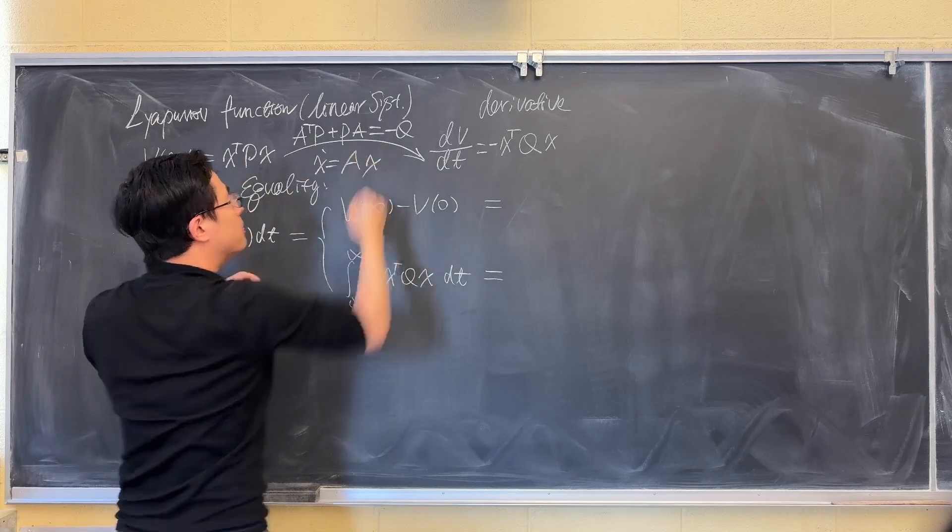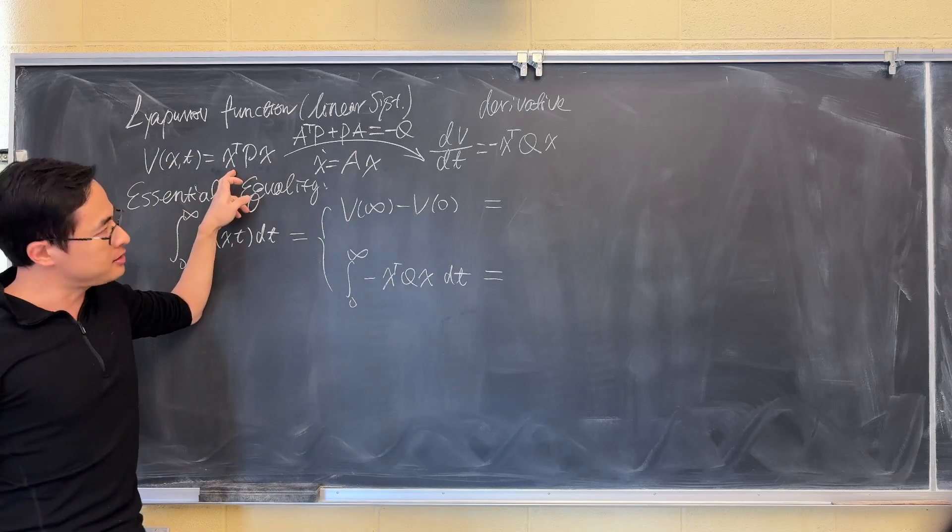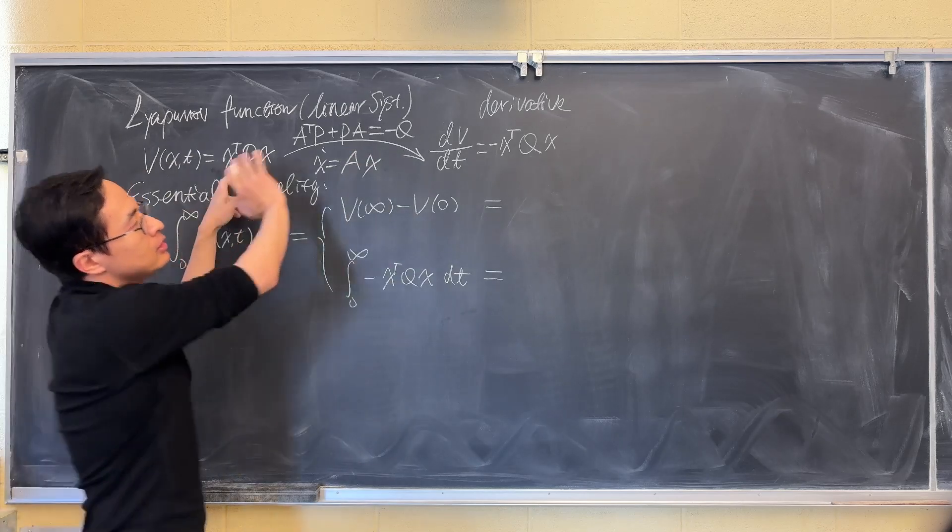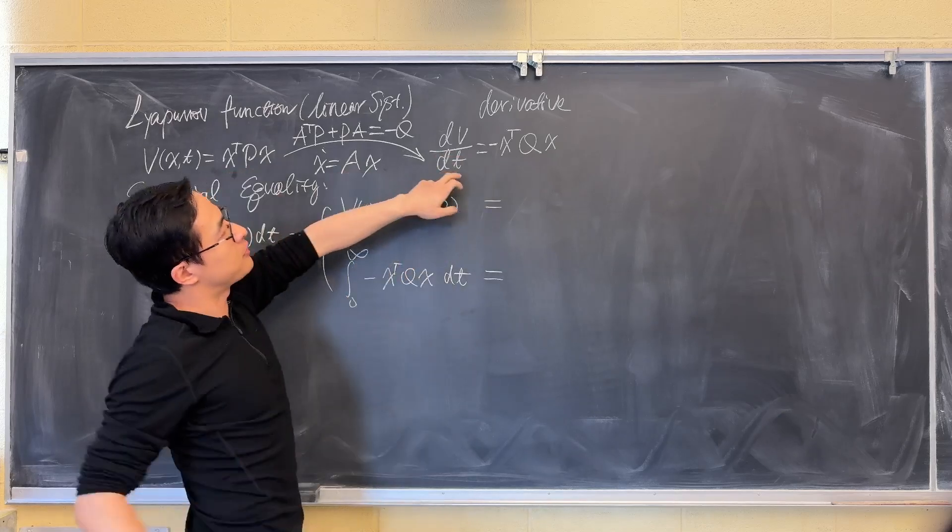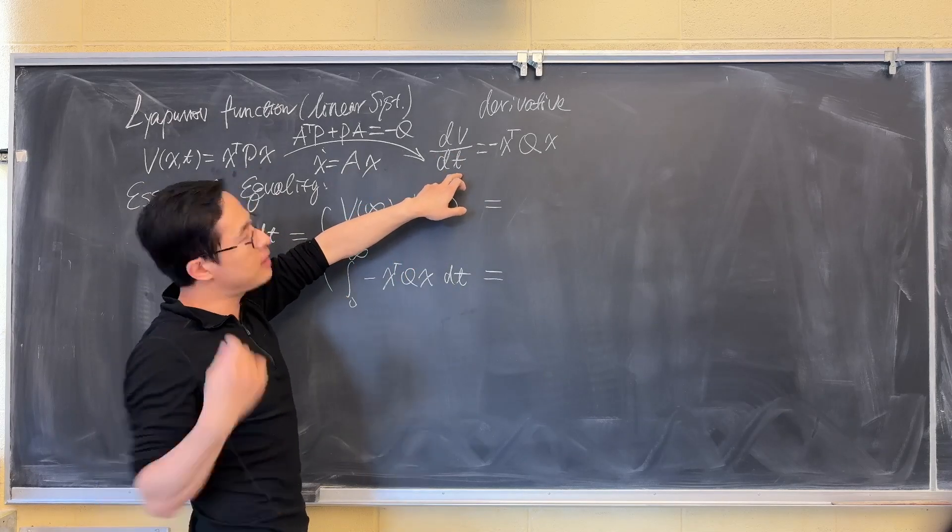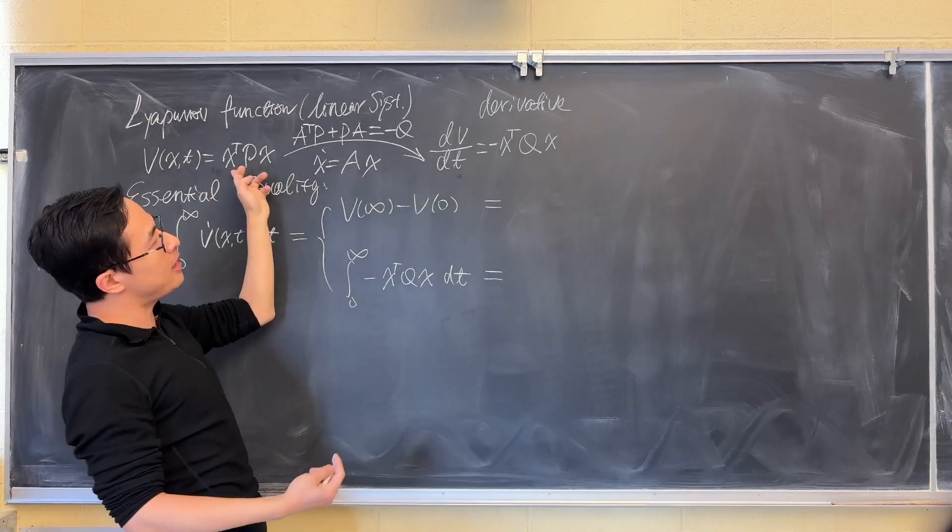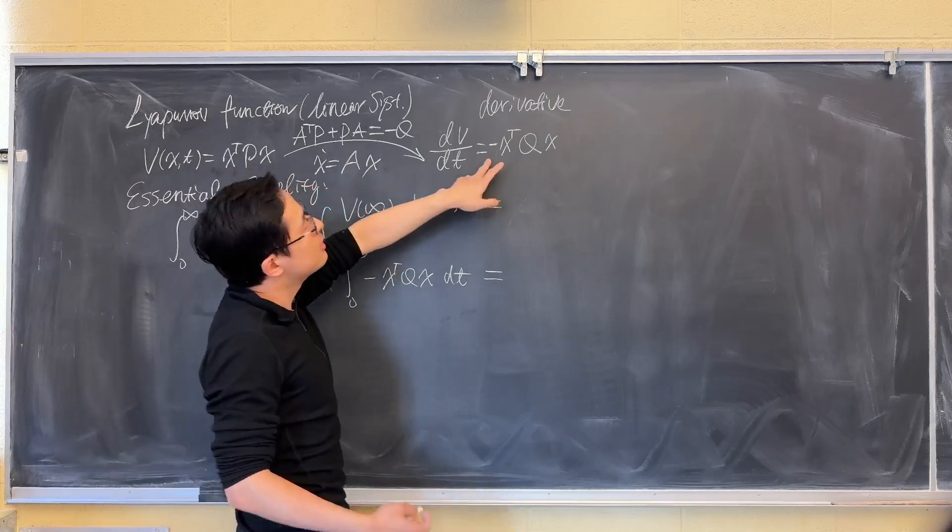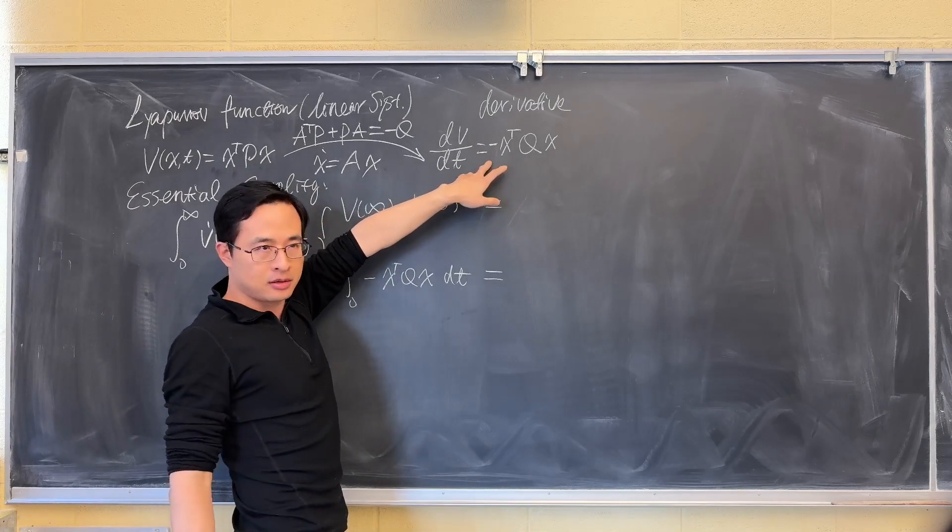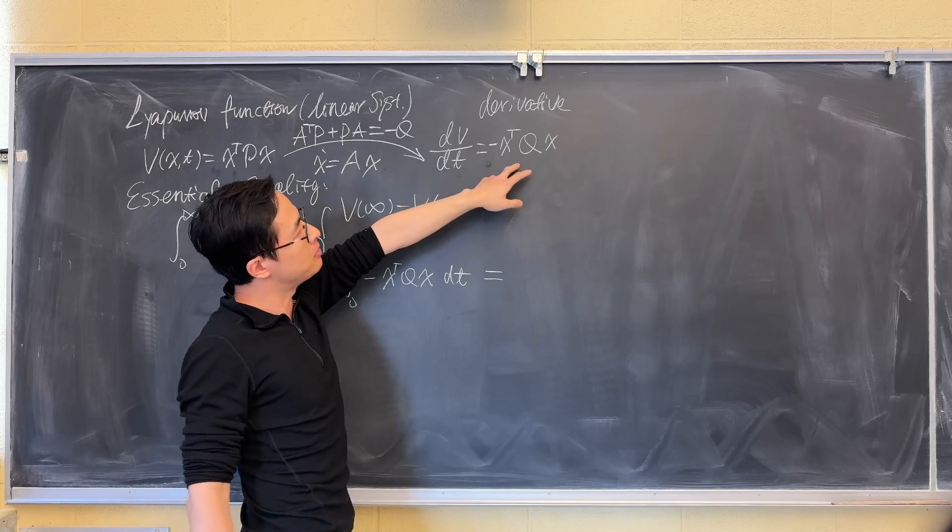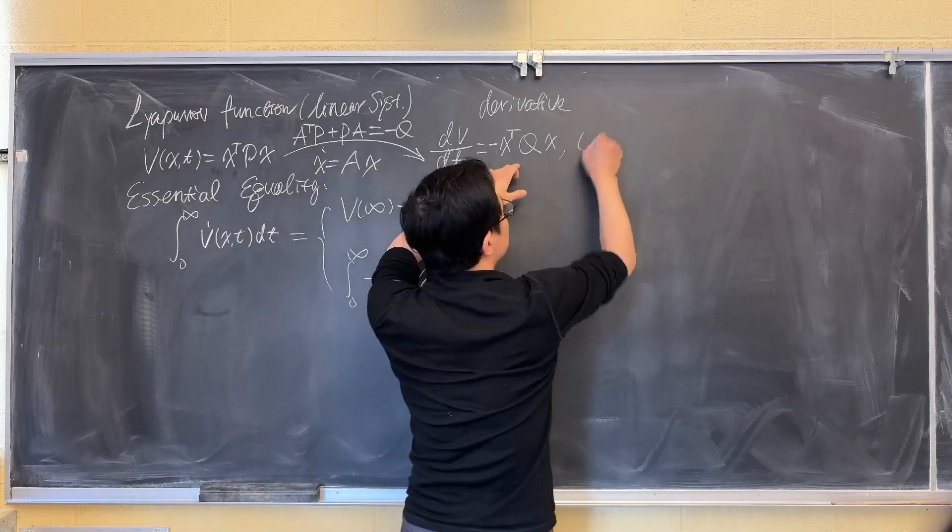We did the derivative, we computed the derivative of the energy-like function, this Lyapunov candidate, and we introduced this new matrix Q, positive definite matrix Q.